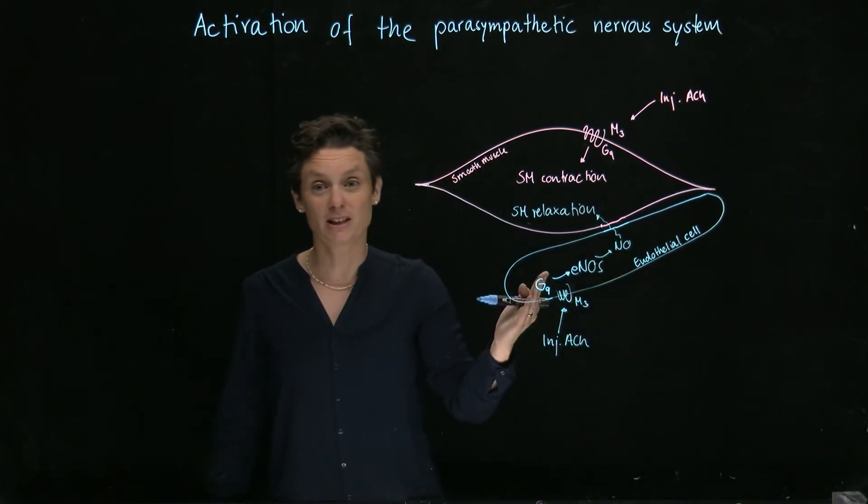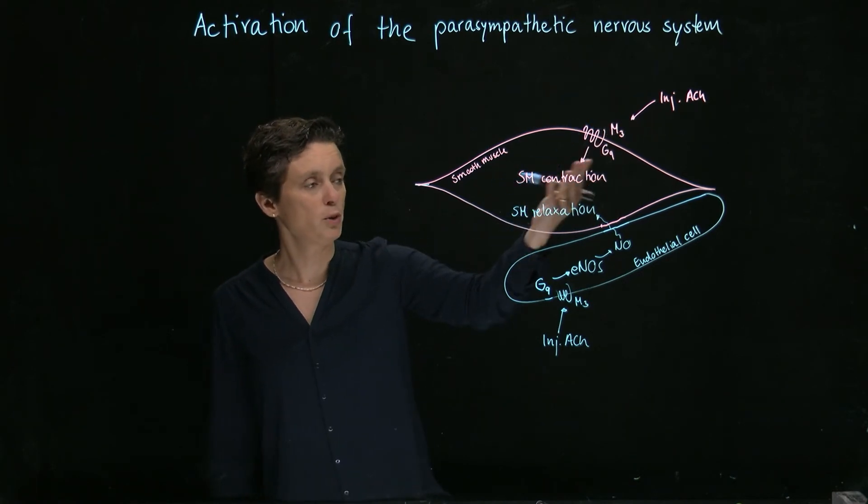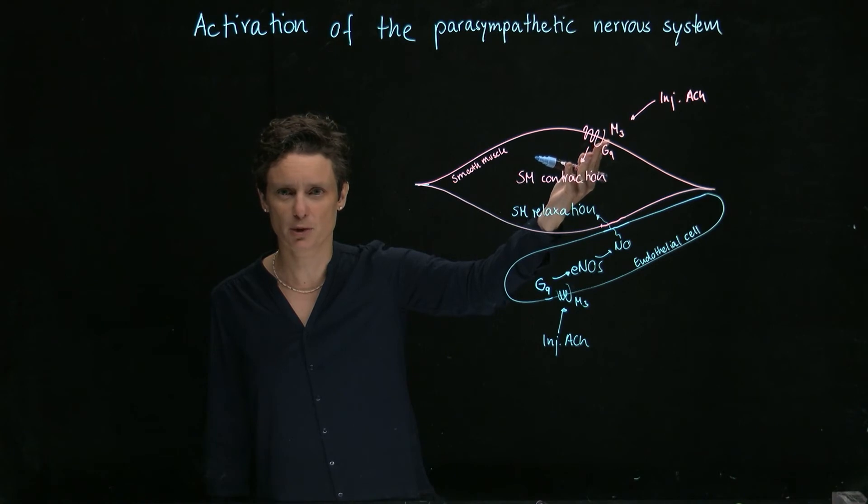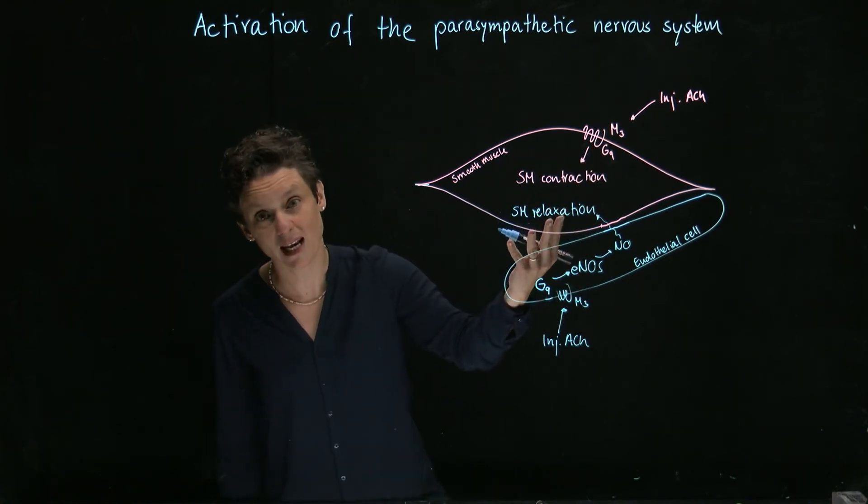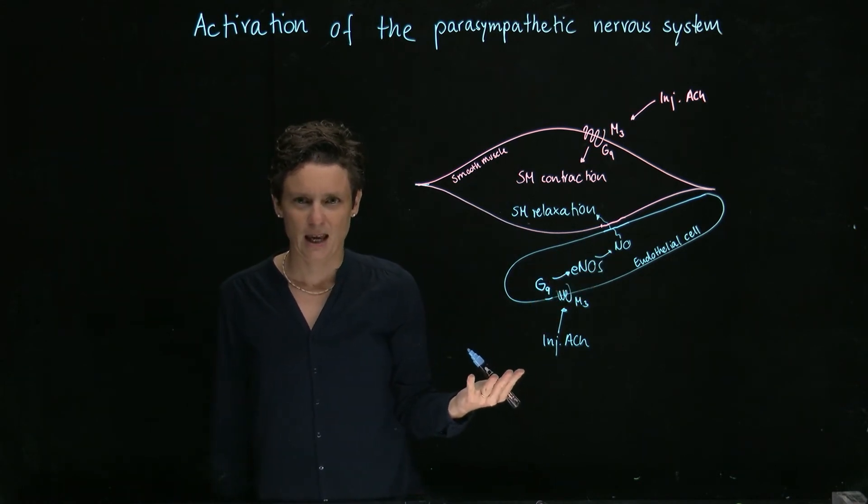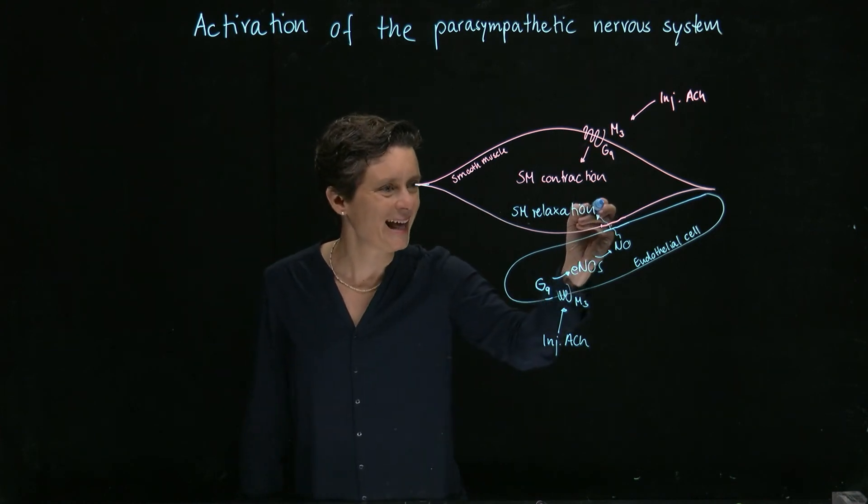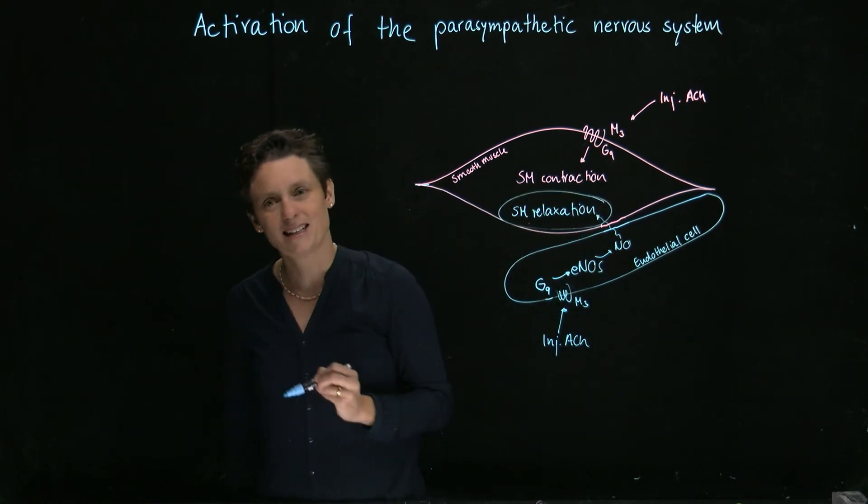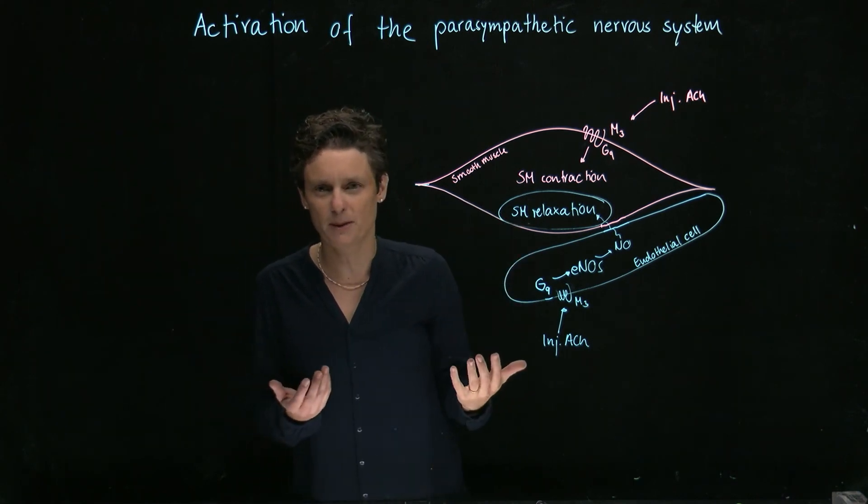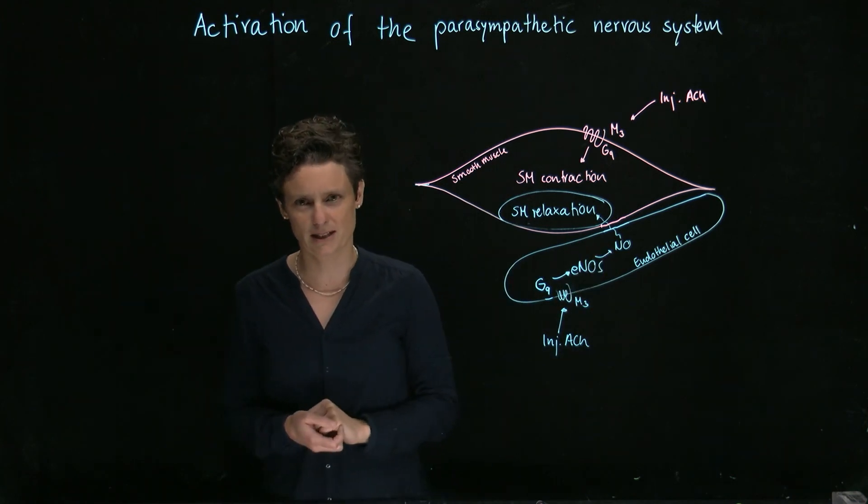So now what you're going to realize is that you have two opposing effects. Smooth muscle contraction, which is mediated by the M3 receptor on the smooth muscle, and smooth muscle relaxation, which is mediated by the M3 receptor on the endothelial cells. So if we give drugs that activate these receptors, the relaxation is the dominant effect. You just have to know that there's no way to predict that. There are two opposing effects, and one is a winner. It's smooth muscle relaxation.